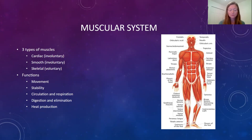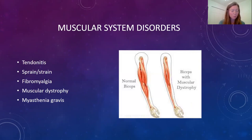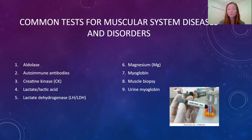Connective tissue is needed for our skeletal and muscular system to work together. Tendons are fibrous tissues that attach muscles to bones, whereas ligaments attach bones to other bones. Some common disorders of the muscular system include fibromyalgia, myasthenia gravis, muscular dystrophy, sprains and strains, and tendinitis. Tests to help diagnose these are found on table 5-3, pages 93 through 94, and can help diagnose things like muscular dystrophy, general muscle damage, skeletal muscle inflammation, or rhabdomyolysis.